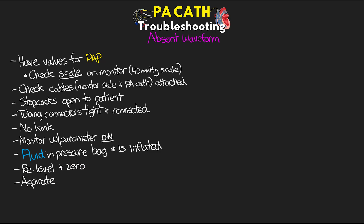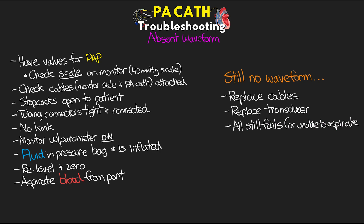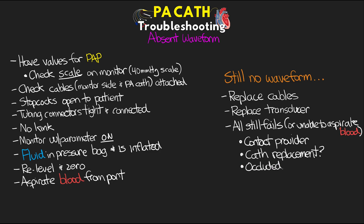You can also try aspirating blood from the affected port, ensuring that you have good blood return and then good ability to flush afterwards. If you still have no waveform but everything else checks out, try replacing the cables first, then if that doesn't fix it, try replacing the transducer. If all still fails, or you're unable to aspirate blood, contact the provider as the catheter may need to be replaced. It is possible that the port being transduced is simply occluded, which may be fixable with some repositioning.